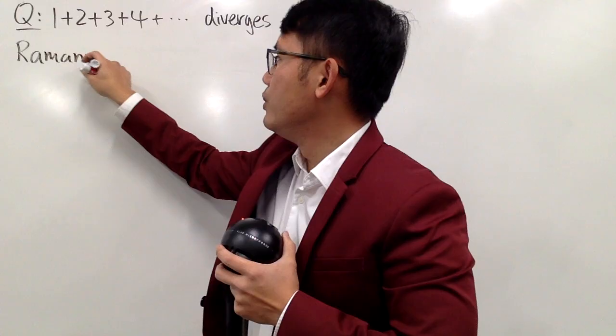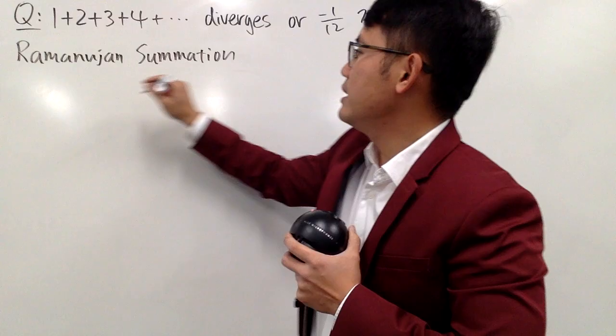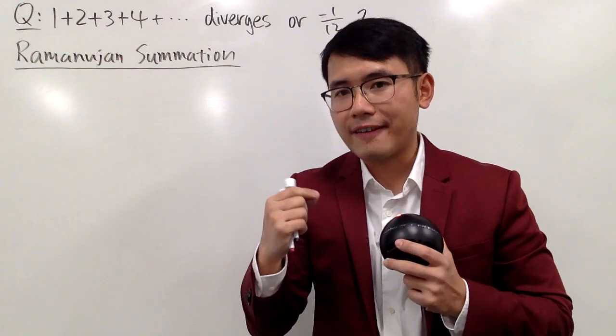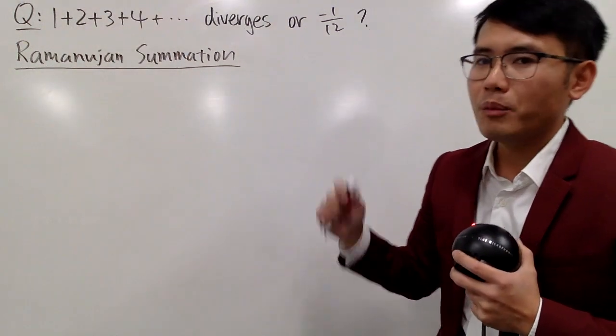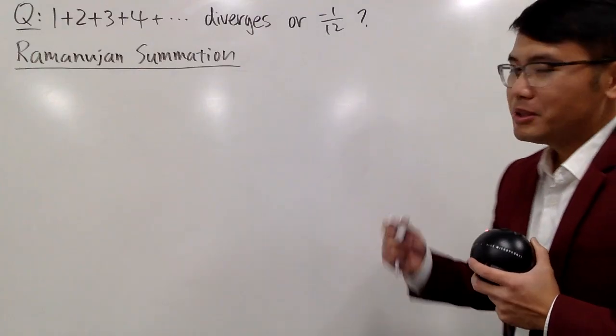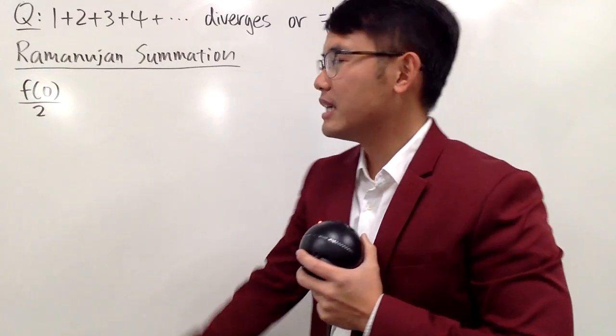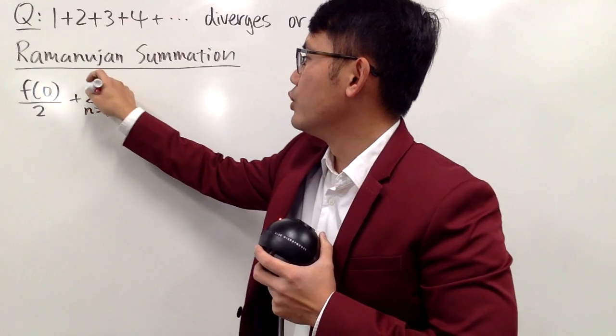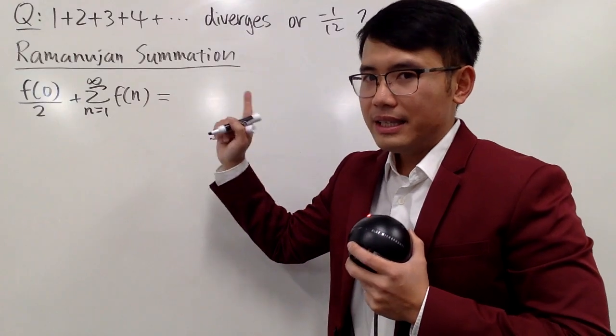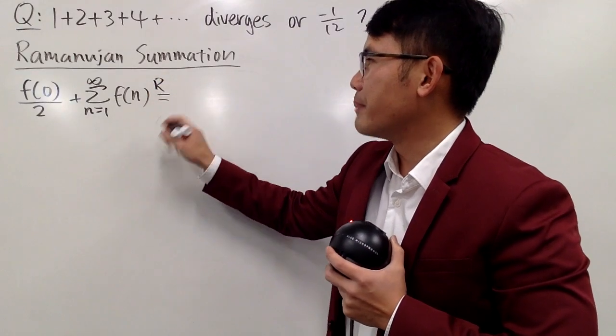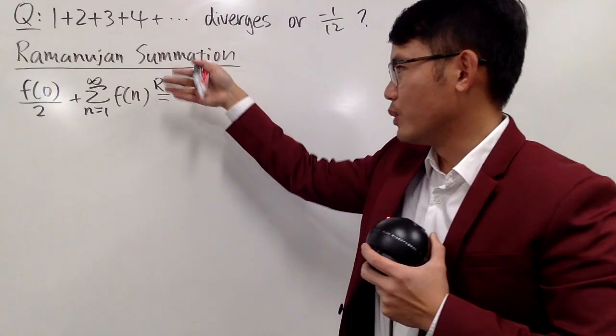We will be using the Ramanujan summation. And what this is, is that this is just a way to assign value to a divergent series like this. This diverges, therefore you can use this little formula to give a value to it. First of all, you have to tell me a function, f of 0, and then you divide it by 2. And then the next part is, you add the sum as n goes from 1 to infinity, f of n.